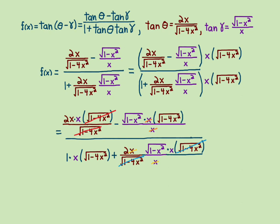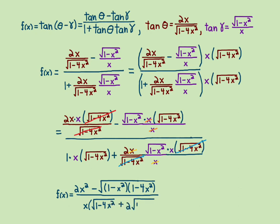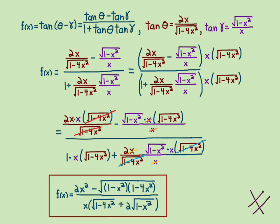The second term on the bottom: both x and the square root of 1 minus 4x squared cancel. What we're left with is: 2x squared minus the square root of (1 minus x squared) times (1 minus 4x squared) in the numerator, and x times the square root of 1 minus 4x squared plus 2 times the square root of 1 minus x squared in the denominator. That's a mess, but that's the answer.